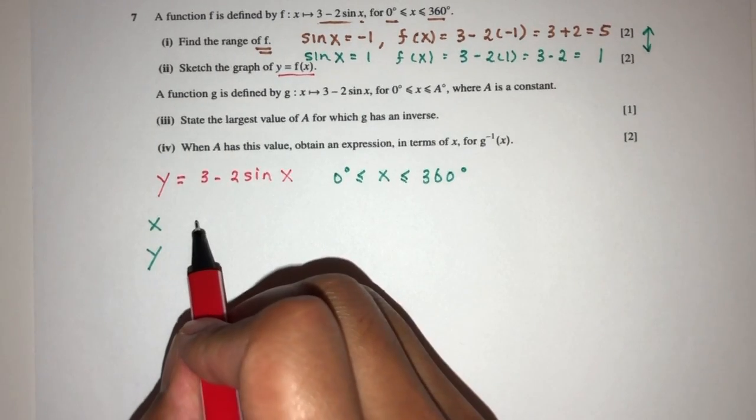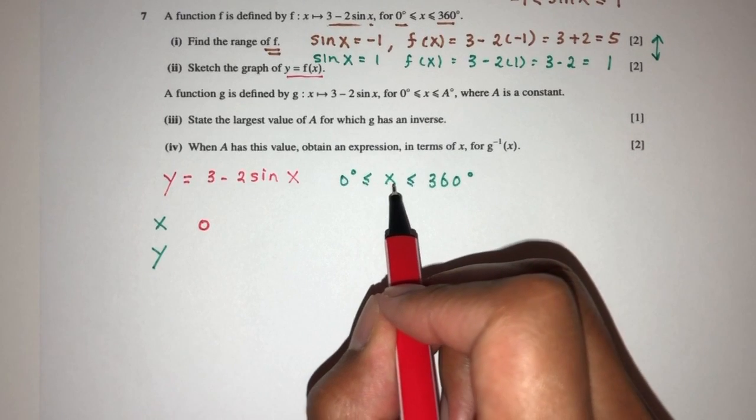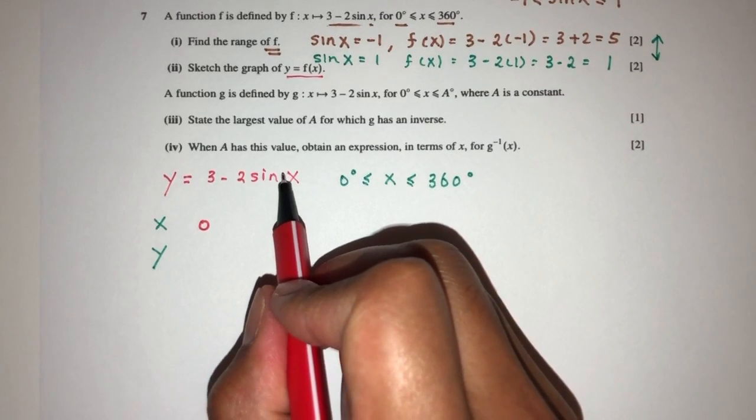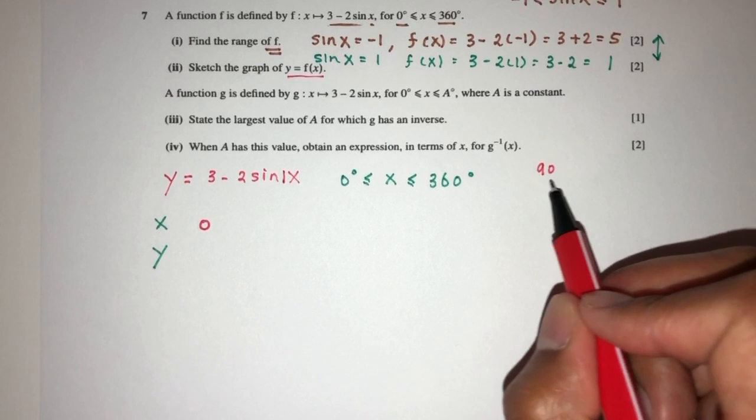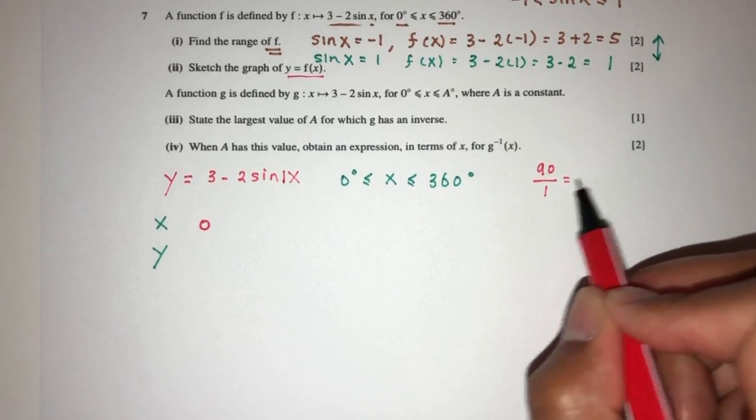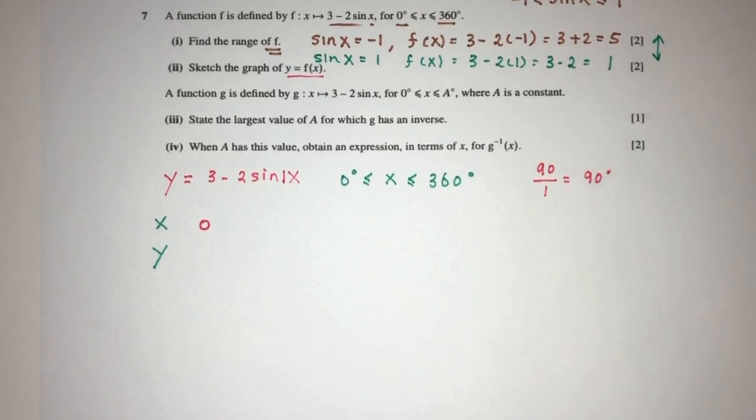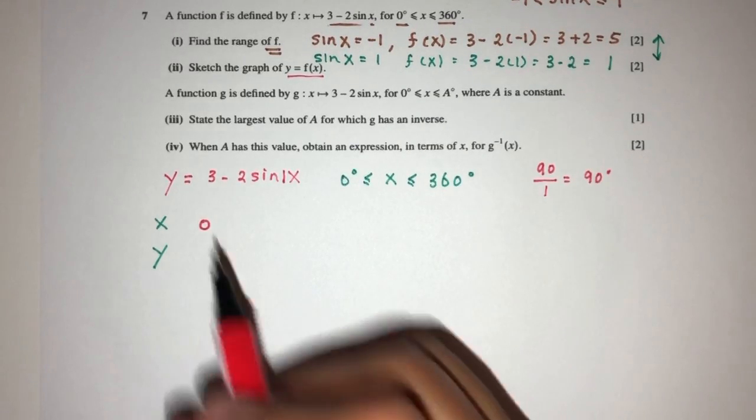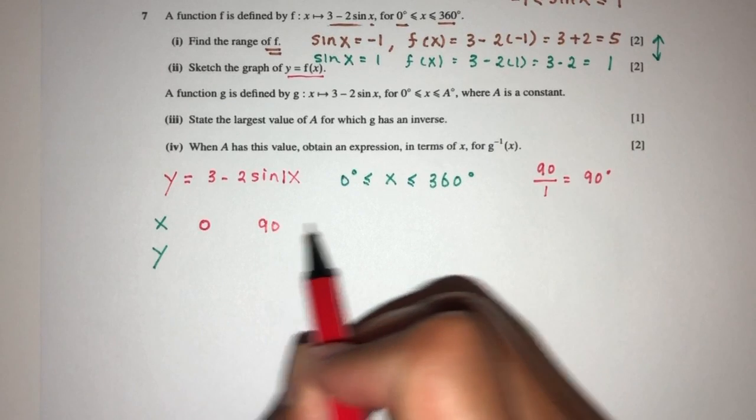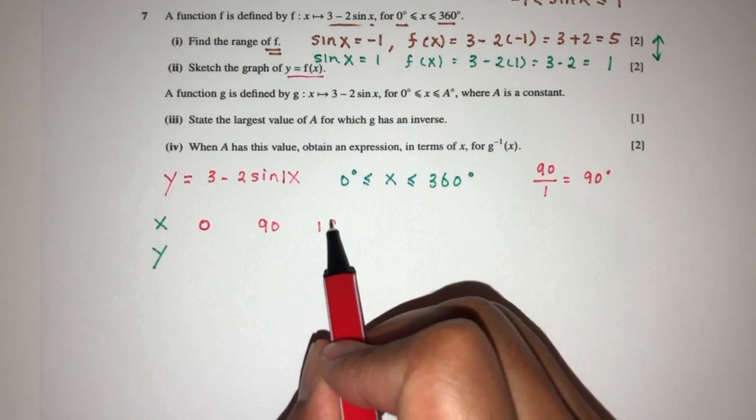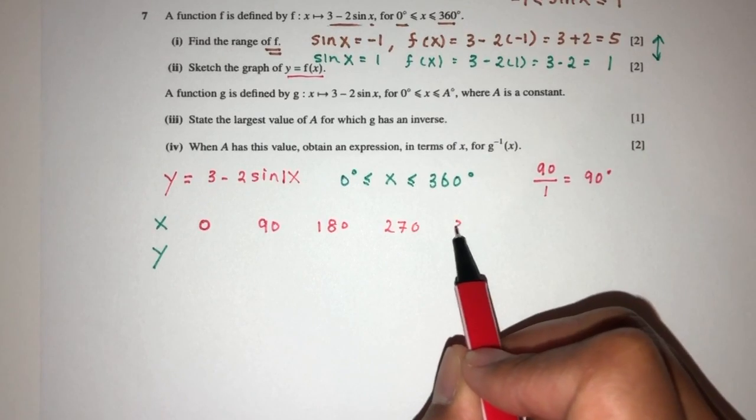So we begin with 0. Now the interval will be, because the coefficient here is 1, will take 90, divide by the coefficient, that will be 90. Now the reason why I choose this is because I want to work with exact values, right? So move on, that will be 90. That will be plus 90, that will be 180. That will be 270, and finally 360.